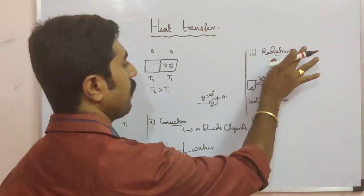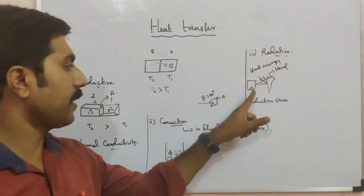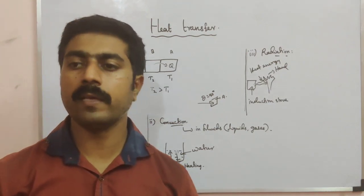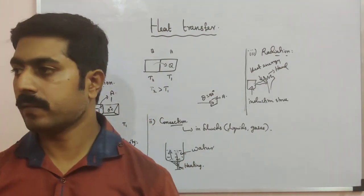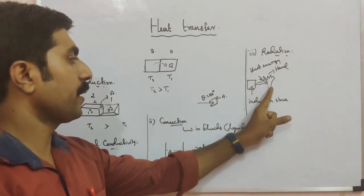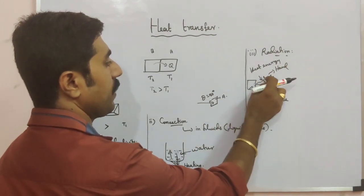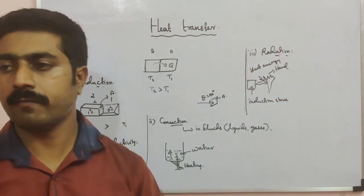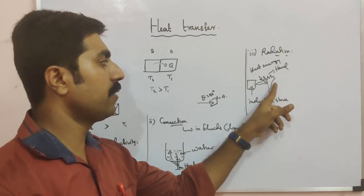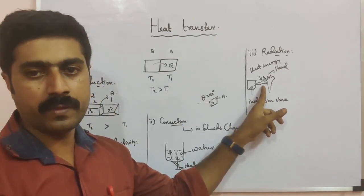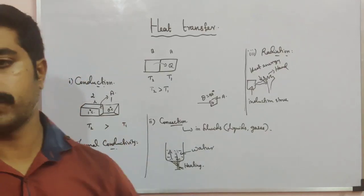The heat energy is transferred from the induction stove to our hand through radiation — that is, by electromagnetic waves. Electromagnetic waves include X-rays, gamma rays, UV rays, visible light, and infrared rays. The process by which heat energy is transferred from one object to another by electromagnetic waves is called radiation. So those are the three modes of heat transfer: conduction, convection, and radiation.